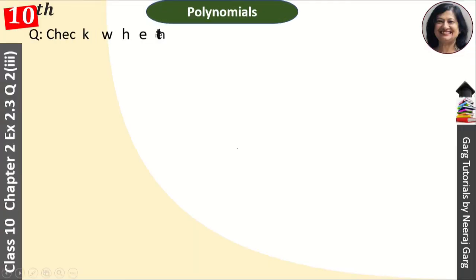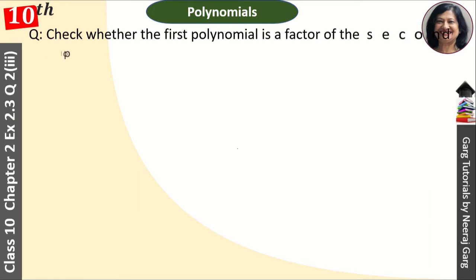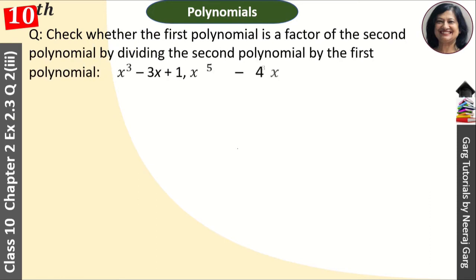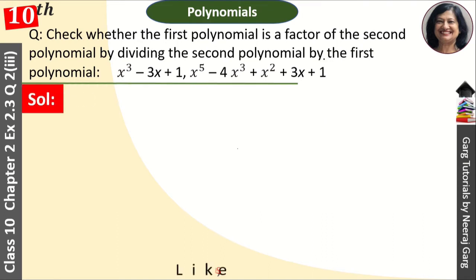Hi, this is Neeraj Garg and you are watching class 10th chapter 2 polynomials exercise 2.3 question number 2 third part. Check whether the first polynomial is a factor of second polynomial by dividing the second polynomial by the first polynomial.